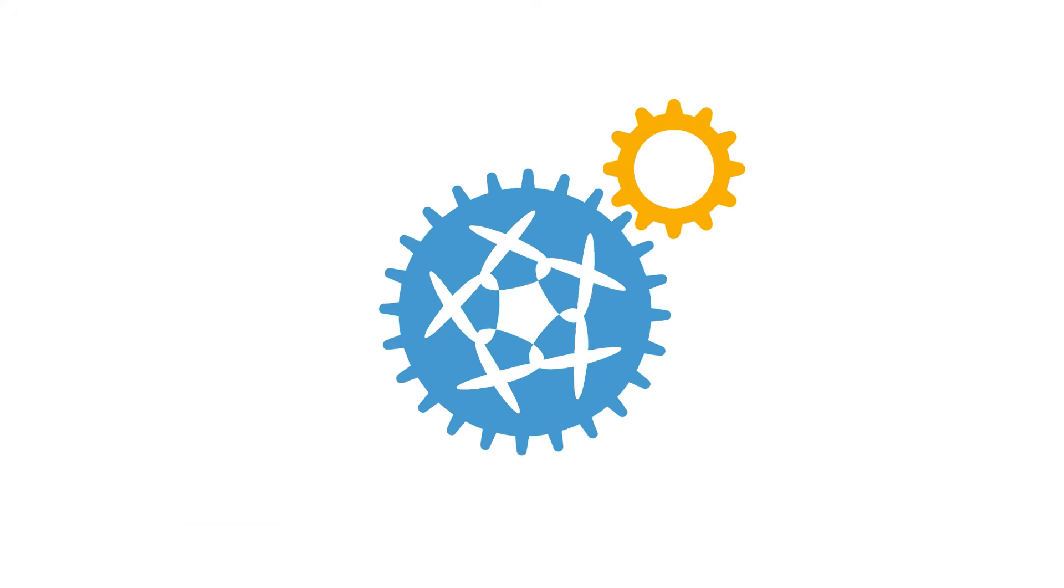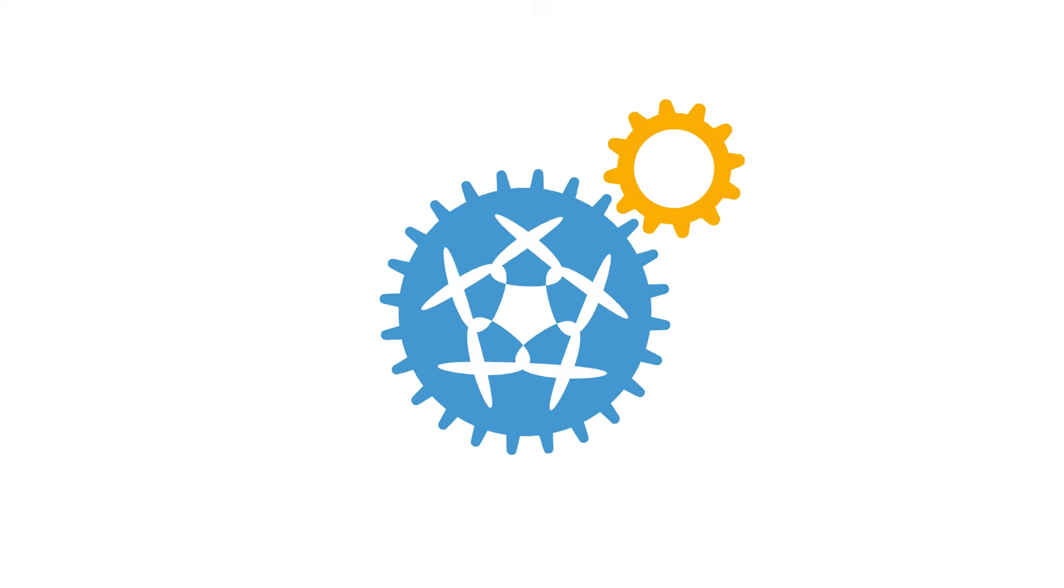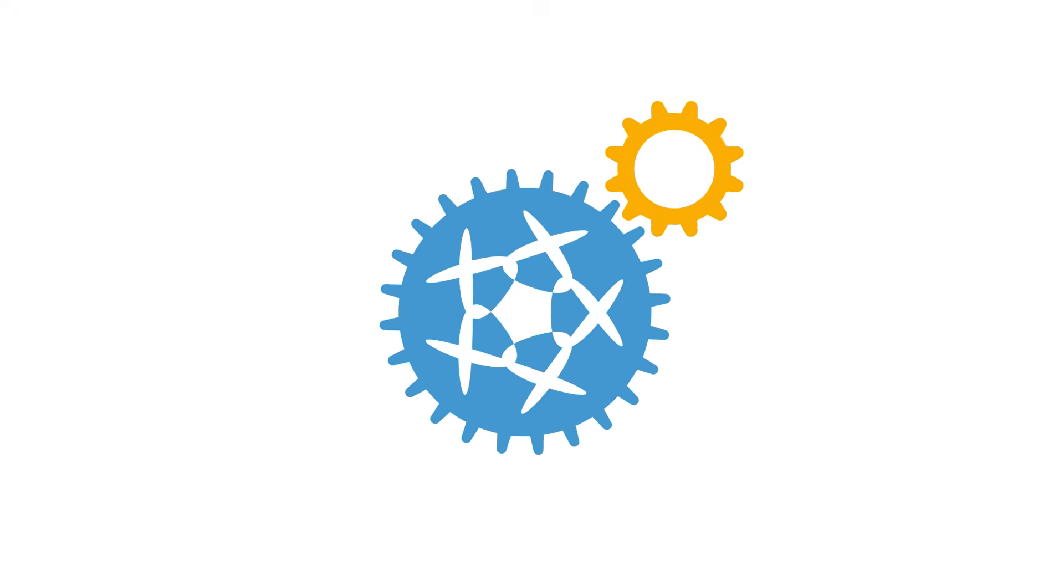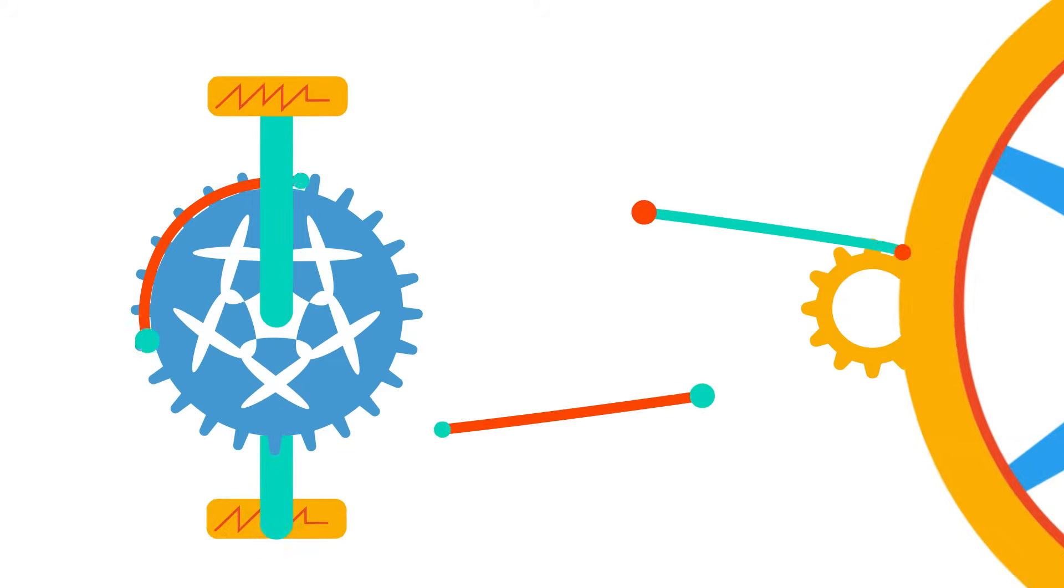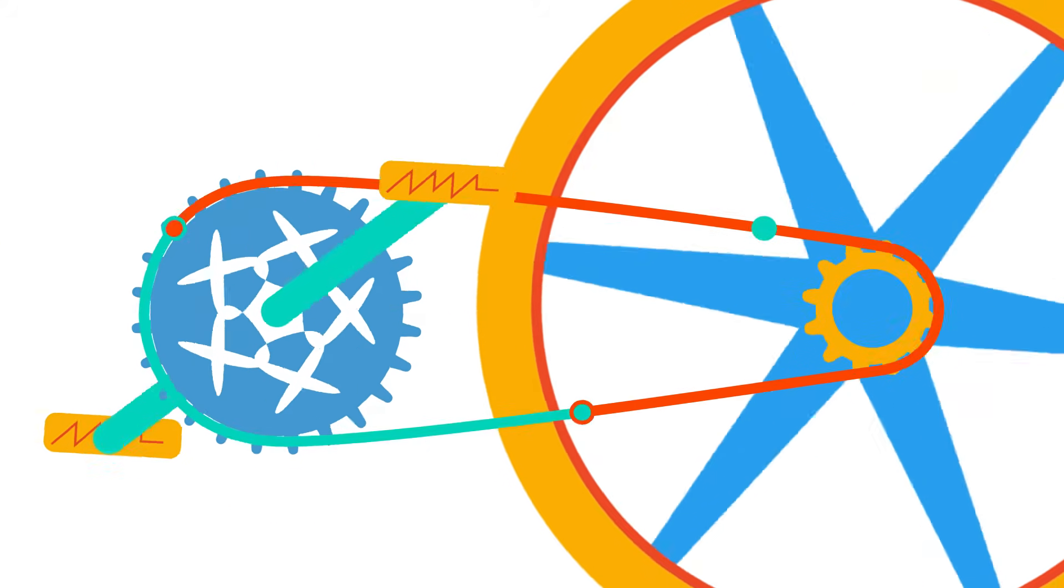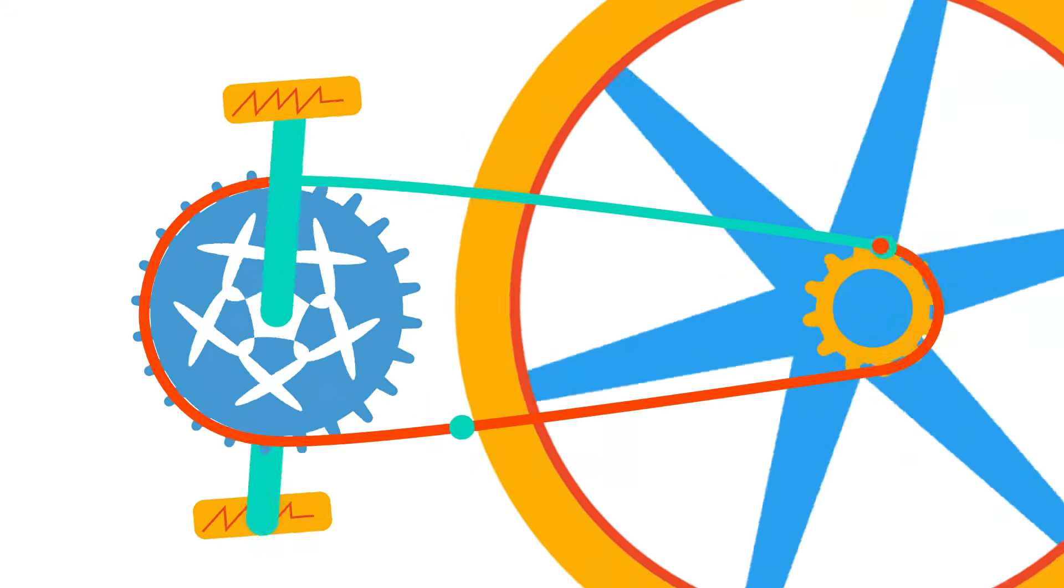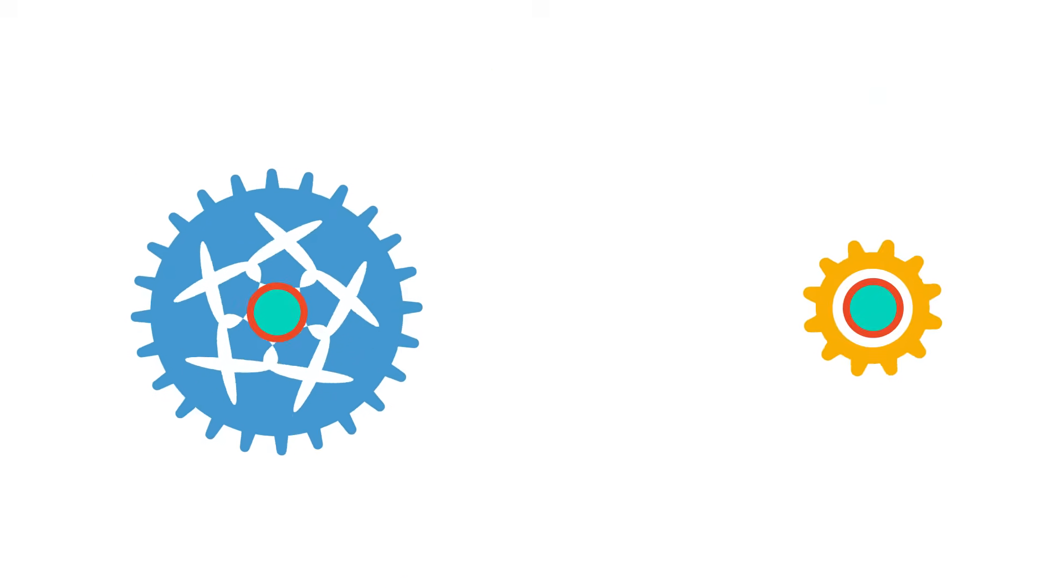Gears are wheels with teeth on the edges that fit together. They transmit power from one part of a machine to another part. So in a bike, they take the power from the pedals to the back wheel. Gears rotate on an axle at their centre.